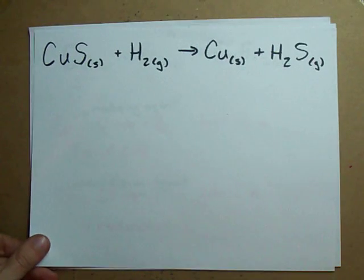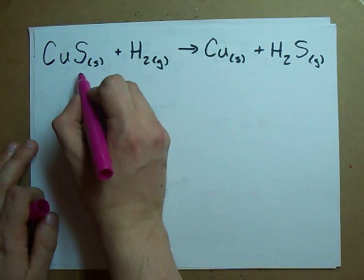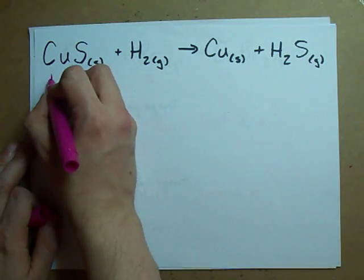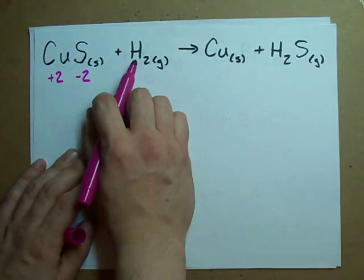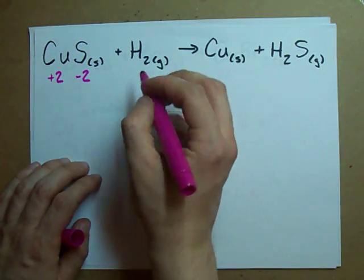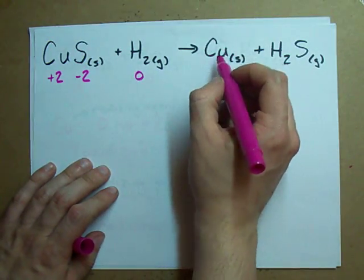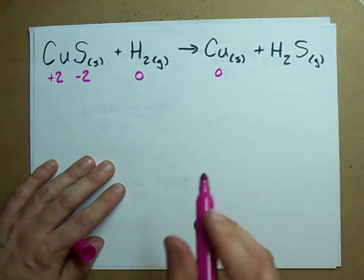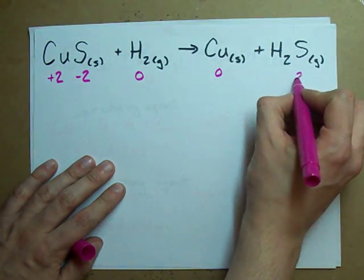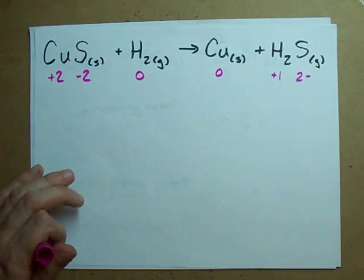We can do the exact same process with this next reaction, and I'm going to do it quickly. Ionic compound between copper and sulfide — sulfide usually wants a charge of minus 2, so copper wants a charge of plus 2 so they cancel out and form a neutral compound. Two hydrogen atoms connected together with no total charge — covalent bond, they both have a charge of 0. Copper atom on the product side: no charge, charge of 0. And we've got a polar covalent compound with hydrogen connected to sulfide — sulfide is minus 2, each hydrogen is plus 1. That checks out valence-wise.